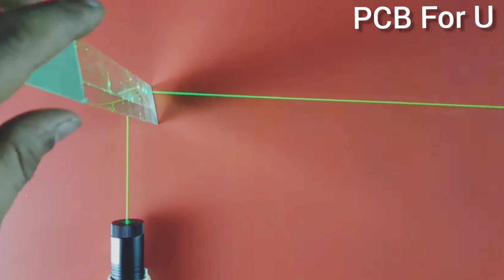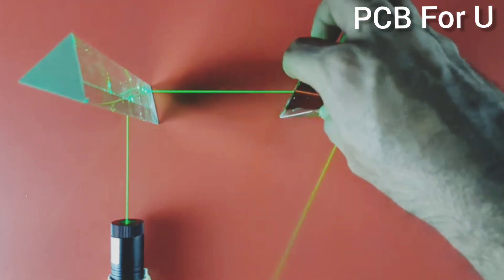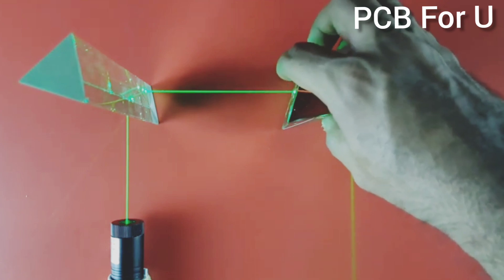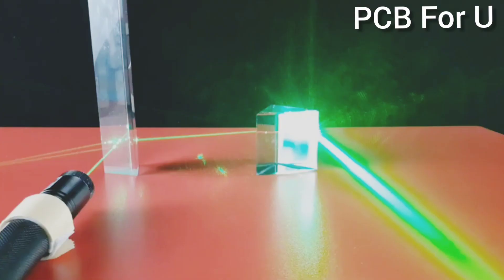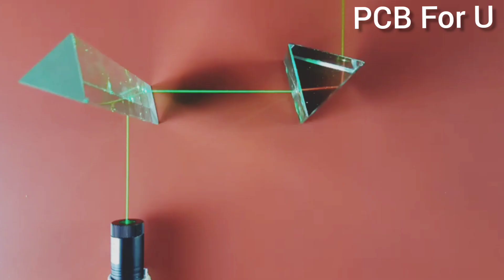This is the straight beam incident on the black screen. We place one prism to get 90 degree and another prism also can get 90 degree. So the total is 180 degree reflection.